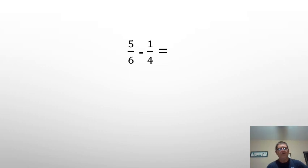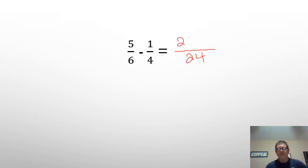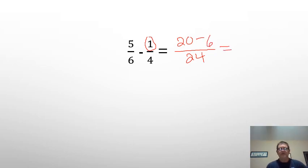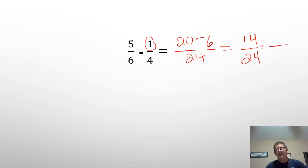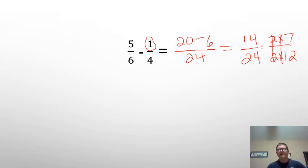Let's see how this works when we're subtracting. Now remember how we would do this before — the old way. I know 6 times 4 would be 24. I had to multiply 6 by 4, so I had to multiply 5 by 4, and I would get 20 — the 5/6 is going to be 20/24. And I know my 1/4 — the denominator — I'm going to have to multiply by 6 to get 24, so my numerator I'm going to have to multiply by 6, and I end up with 6/24. So 20 minus 6 gives me 14/24. I can see they're both even, so 2 times 7 gives me 14, and 2 times 12 gives me 24. I take them out and I can see I have 7/12.